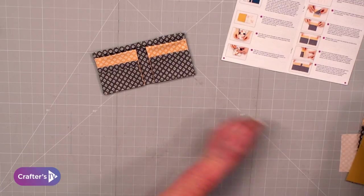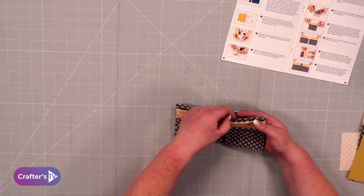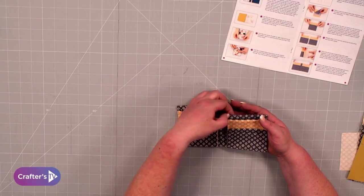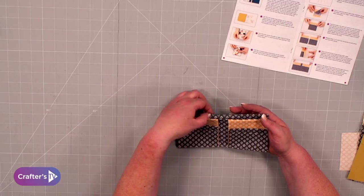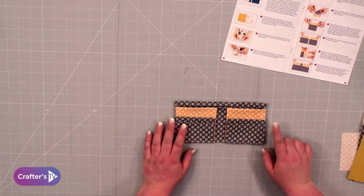Once you've stitched it around, clip all your corners and then turn it through the gap. Once you've turned it through, you can fold in the seam. I like to fold it over a quarter of an inch and rub it with my fingernail, then press it to get it nice and flat.